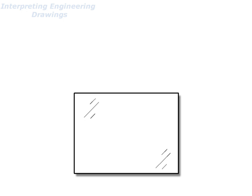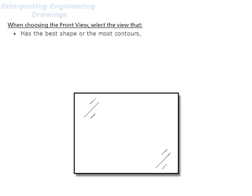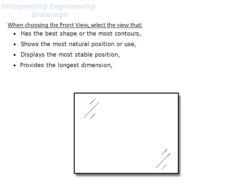Before we begin drawing, we need to choose our first view. When choosing the front view, select the view that has the best shape or the most contours, shows the most natural position or use, displays the most stable position, provides the longest dimension, and contains the least hidden features.